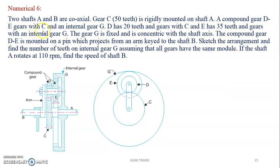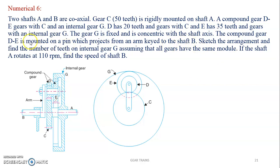A compound gear DE gears with C and an internal gear G. C is in mesh with compound gear DE, specifically with D. D and E are on the same shaft, and E is in mesh with the internal gear G. D has 20 teeth and gears with C. E has 35 teeth and gears with internal gear G. The gear G is fixed and is concentric with the shaft axis — it is a large gear whose center coincides with the axis. The compound gear DE is mounted on a pin which projects from an arm connected to shaft B.